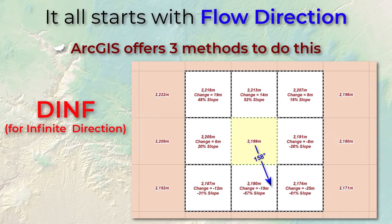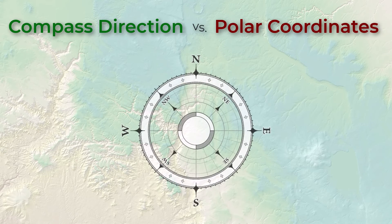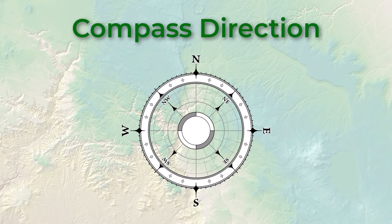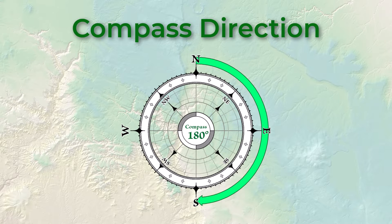Now just to confuse things, DINF is not exactly the same as aspect. The tool uses a slightly different algorithm, and also the tool calculates direction in mathematical direction instead of compass direction. In compass directions, zero degrees means due north and values increase when you go clockwise. So east is at 90 degrees and south is at 180 degrees. Whenever you calculate or measure aspect, those aspect values are recorded using this compass system.